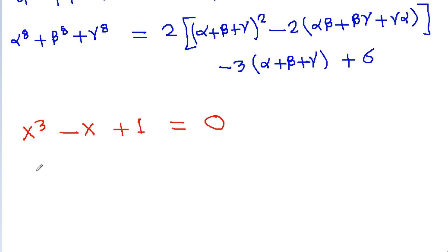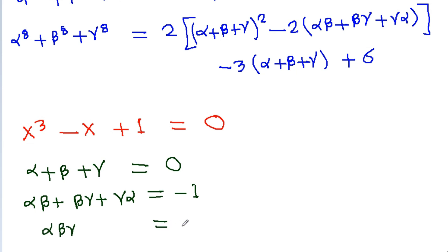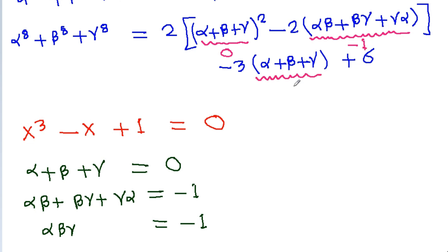From Vieta's formulas for x³ - x + 1 = 0, the sum of roots alpha + beta + gamma equals the coefficient of x² which is 0. And alpha·beta + beta·gamma + gamma·alpha equals the coefficient of x, which is -1. So alpha + beta + gamma = 0 and alpha·beta + beta·gamma + gamma·alpha = -1.